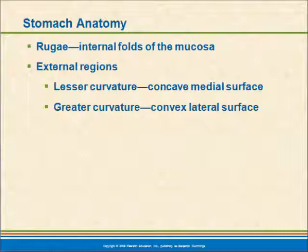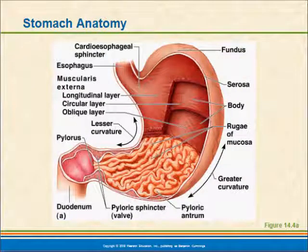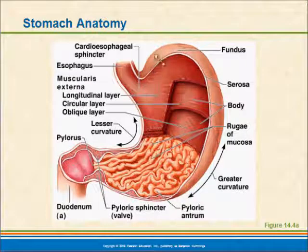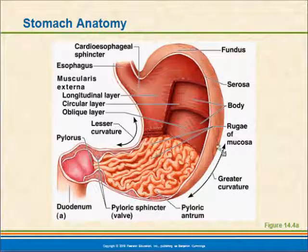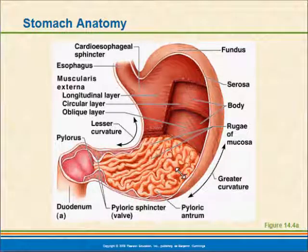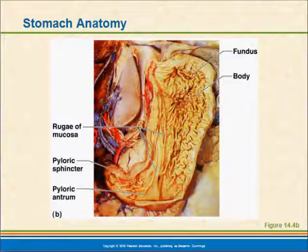Looking at a picture of the stomach, you can see where these structures are. The cardioesophageal sphincter opens and closes to allow food in. The domed area is the fundus, largely filled with air. You can see the greater curvature and the lesser curvature. At the bottom is the pyloric sphincter. Within the stomach, all of the folds allow it to expand and provide good surface area for absorption. A dissected stomach also shows the inner folds clearly.